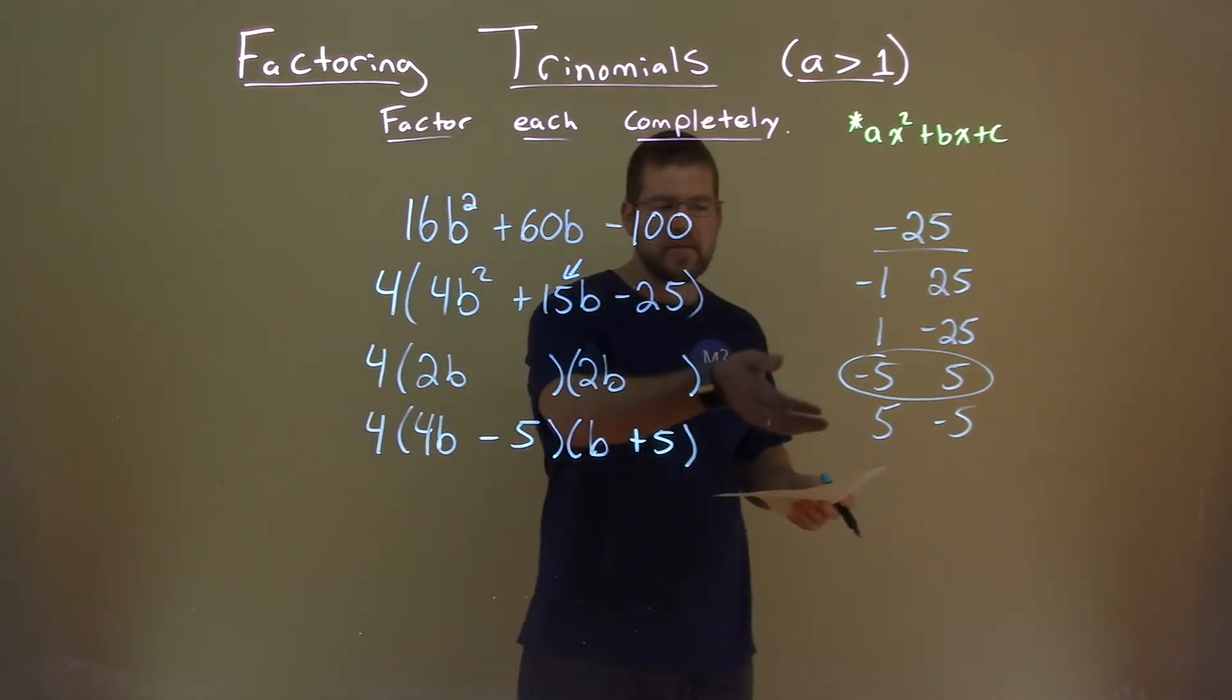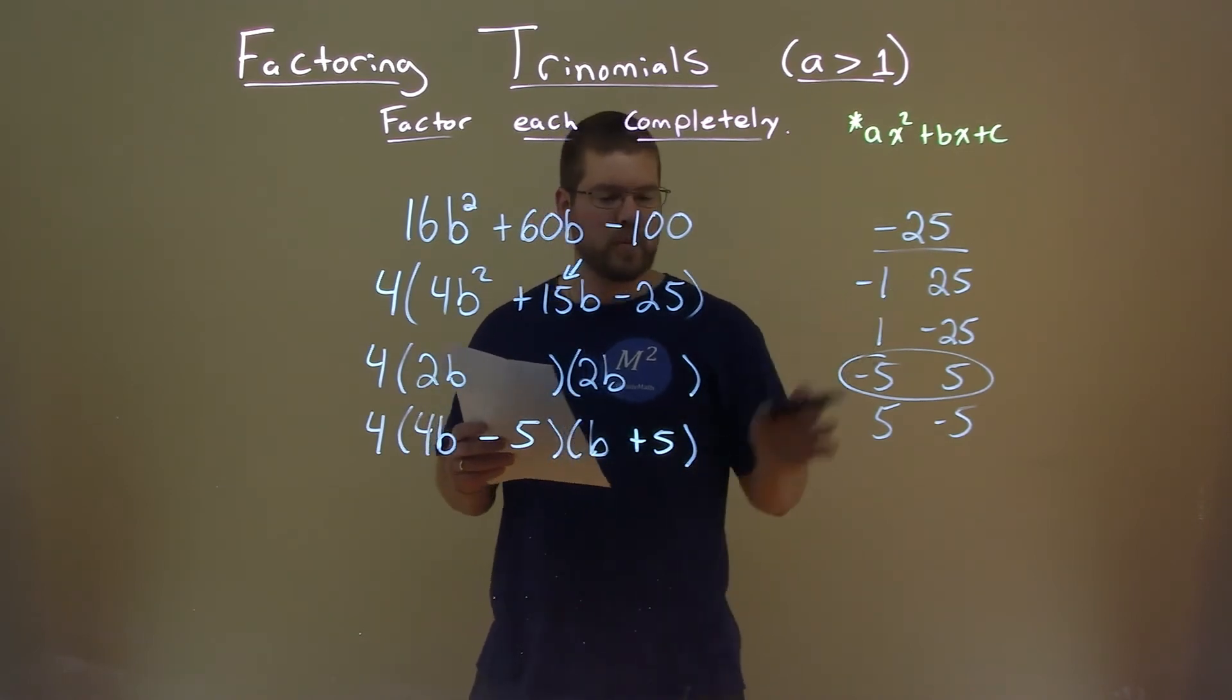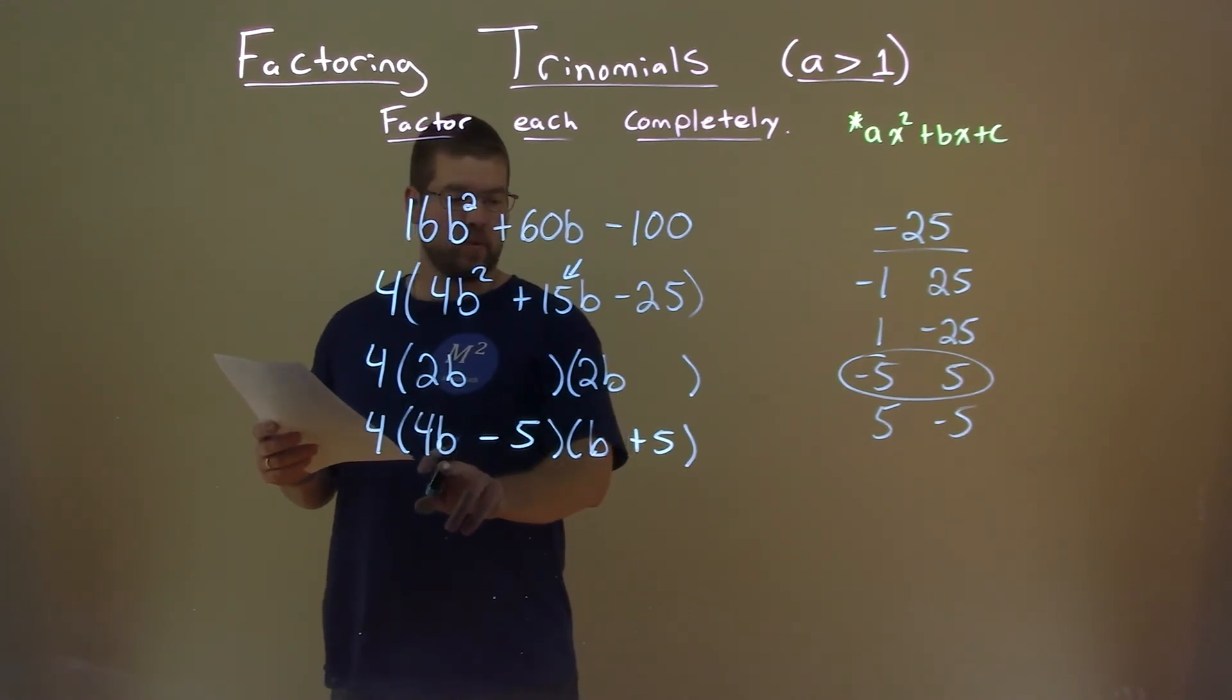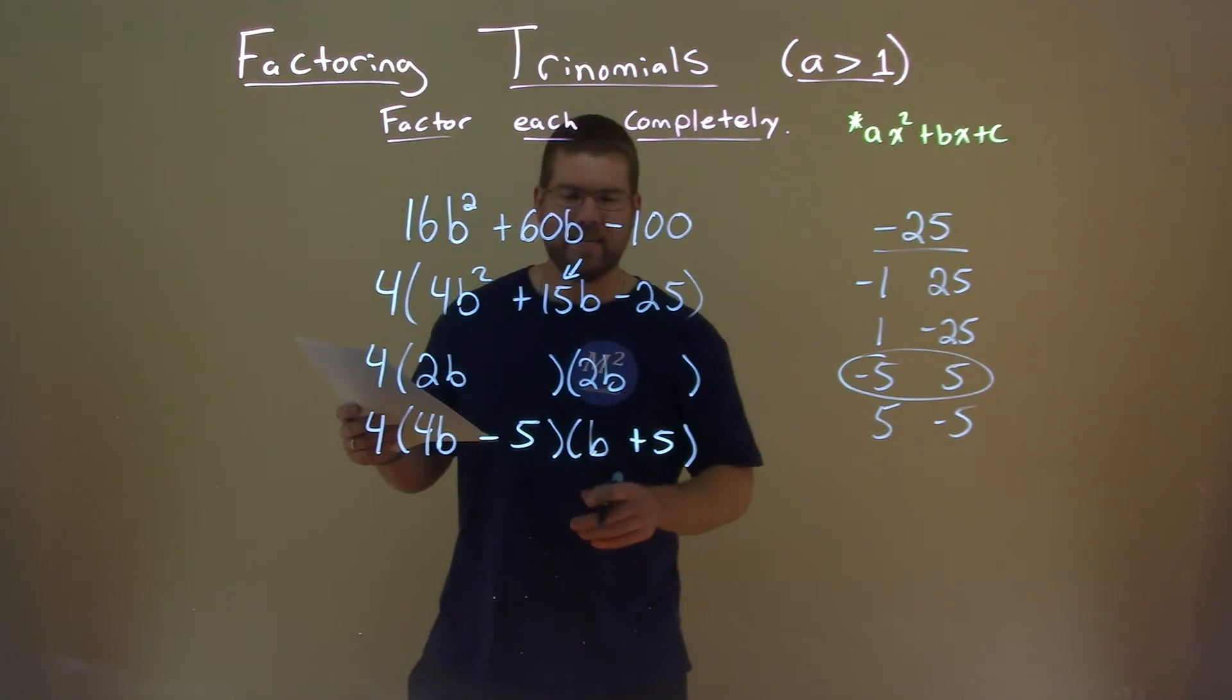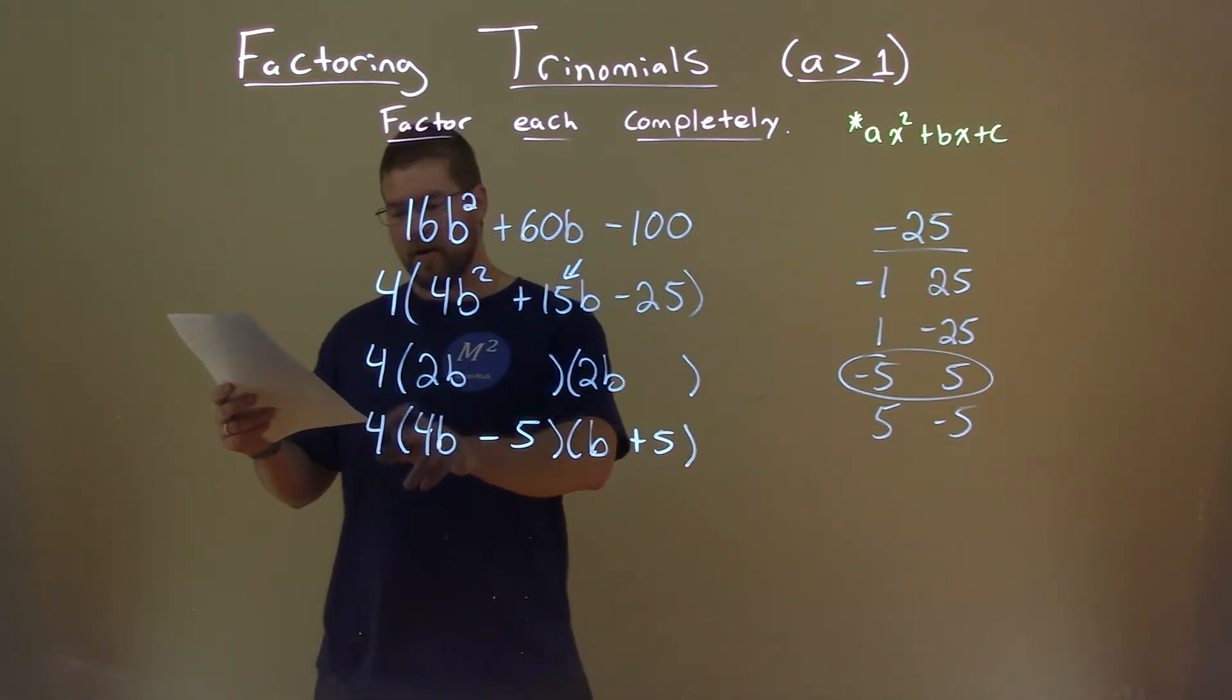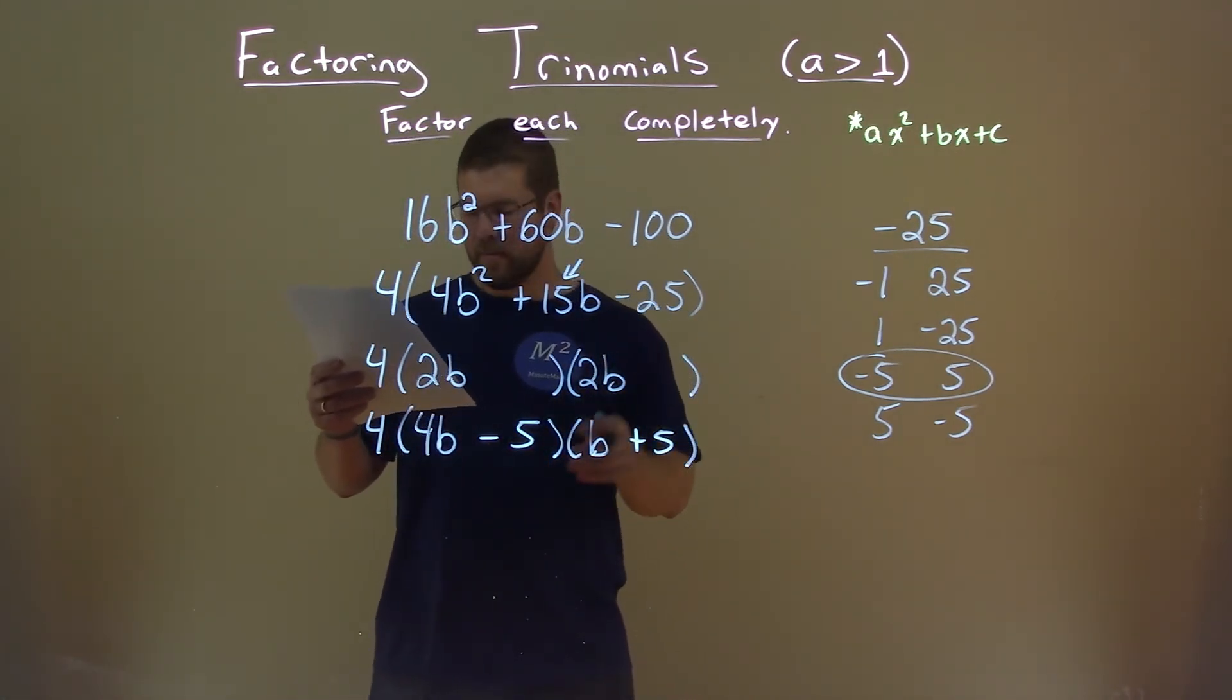So yes, I guessed here, kind of, but it was an educated guess. Alright? I was smart in which one I tried first and it turns out it worked out. And so we have, again, we can see 4b times 5 is 20b plus negative 5 times b is a positive 15b. So there we have our final answer. 4 times 4b minus 5 times b plus 5.